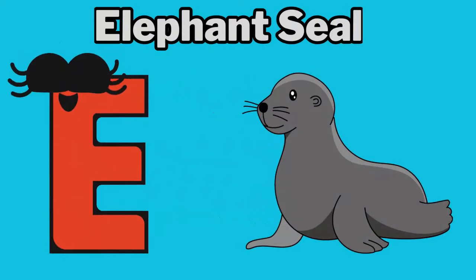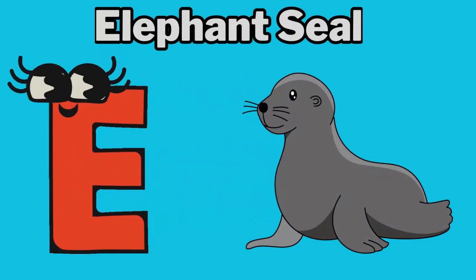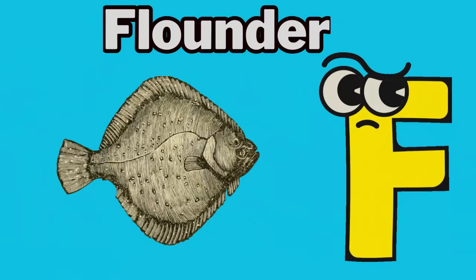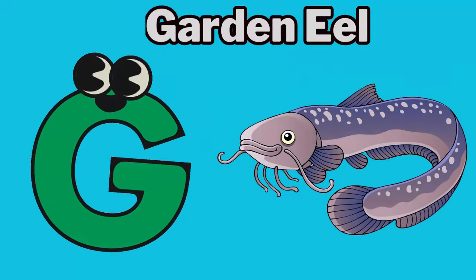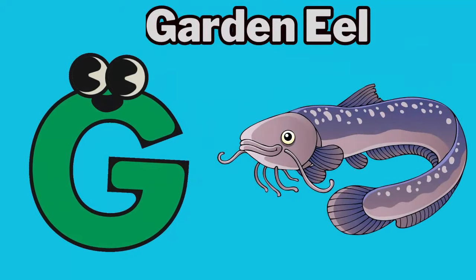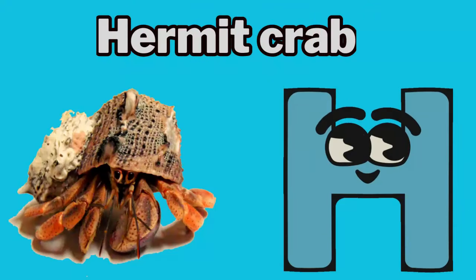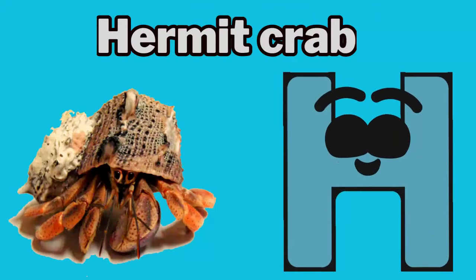E for elephant seal. F for flounder. G for garden eel. H for hermit crab.